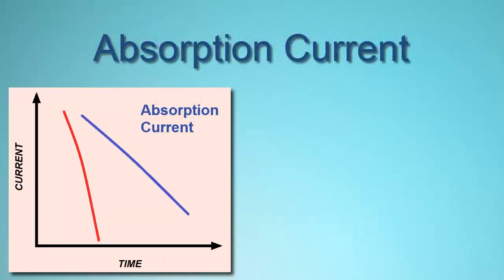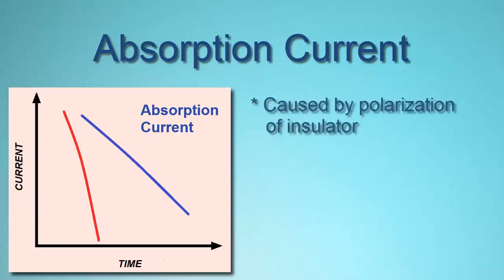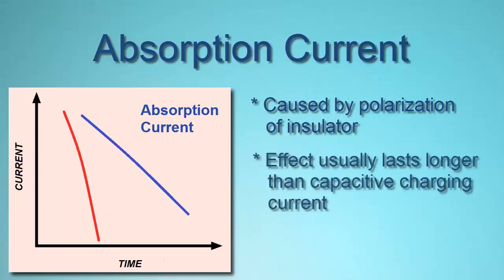Absorption current, also called polarization absorption current, is caused by the insulating material becoming polarized by the electricity flowing through the conductor. As the polarization level increases, the absorption current decreases. This gradual change reflects the storage of potential energy in and along the insulation. As a result, resistance is initially lower and then rises. This produces a measurement profile similar to capacitive charging current, but at a much lower rate. The effect can last several seconds, up to a minute or more.